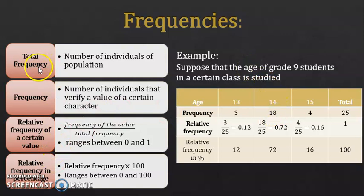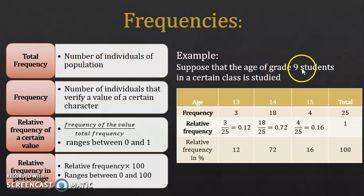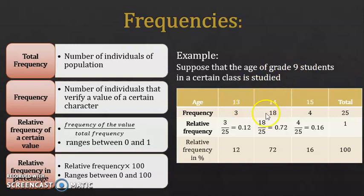The total frequency is the number of individuals in the population — here, the number of students in the class. If it's not given, you just sum up the frequencies to get 25, which is the total frequency and is the same as the number of students in this class.